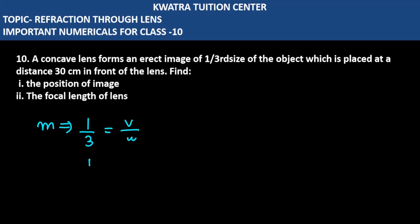And here, what did U already give us? 30. So, how much V will happen? It will be 30 over 3. 30 over 3 is 10 cm. So, your image distance will be 10 cm.